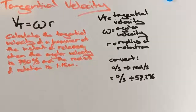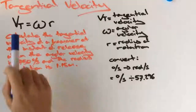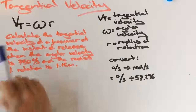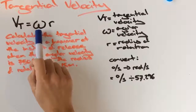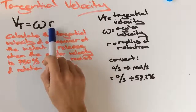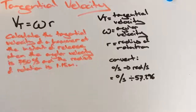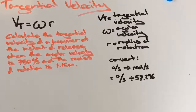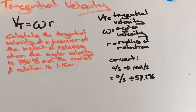Kia ora team! So we're going to look at how to calculate tangential velocity. Here we have our formula: tangential velocity is equal to angular velocity times our radius of rotation. So if we get a question that states: calculate the tangential velocity of a hammer at the instant of release when the angular velocity is 750 degrees per second and the radius of rotation is 1.15 meters.